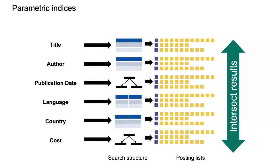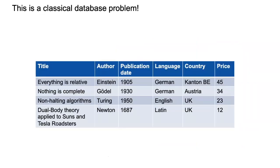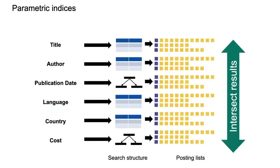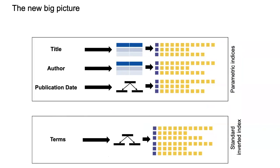With parametric indices, you look up what people enter in the form, then look up in the postings list. The only thing that changes is that instead of terms on the left, we have other criteria, and then you intersect the results. The new big picture for a complete system has parametric indices on metadata — title, author, publication date — plus the full text index, which is the standard inverted index mapping terms to documents. We just have more indices.